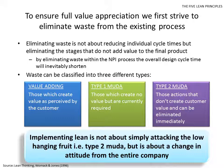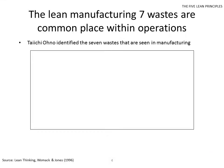Implementing lean is not about simply attacking the low-hanging fruit — it's not all about Type 2 muda. It's about a long-term change in attitude from the entire company, really planning and working out of Type 1 muda. There are seven common wastes, identified by Taichi Ohno. You can read his book or look at the thinking from Lean Thinking by Womack and Jones.